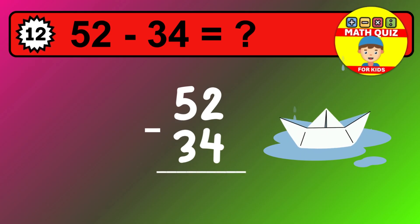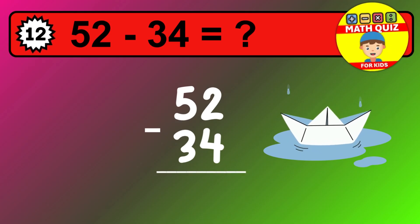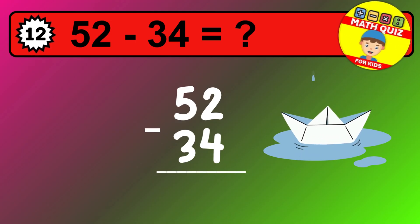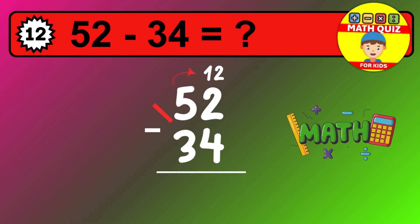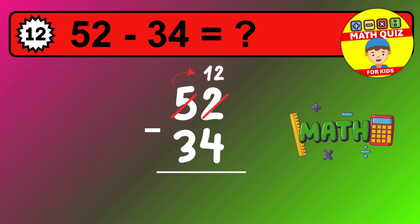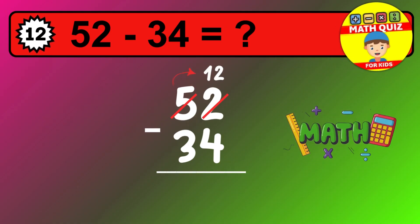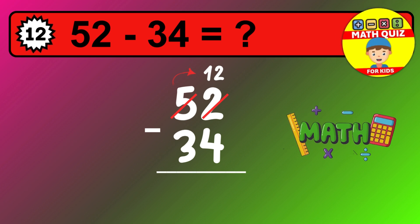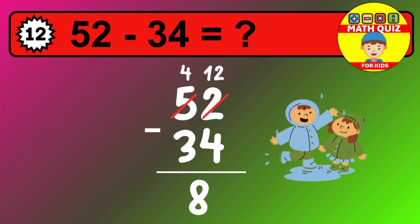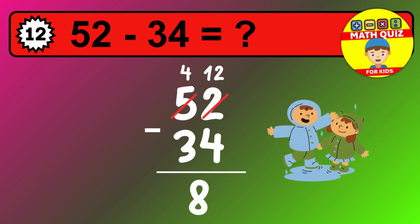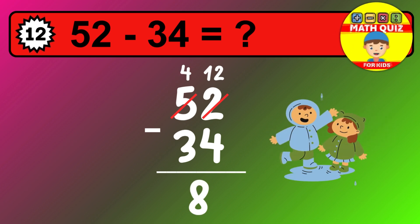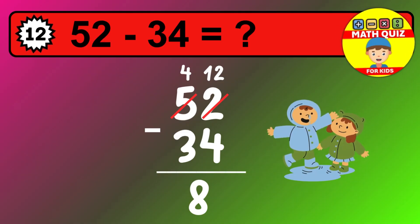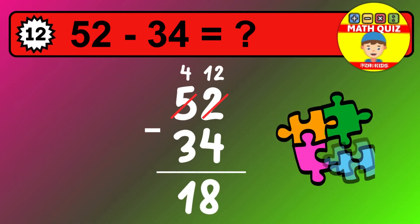Let's solve this step by step. We start with the units. 2 minus 4 is not possible, so we need to regroup. We take one 10 from the tens column. Now we have four tens and the units become 12. Now we subtract. 12 minus 4 is 8. Then we go to the tens. 4 minus 3 is 1. The final answer is 18.